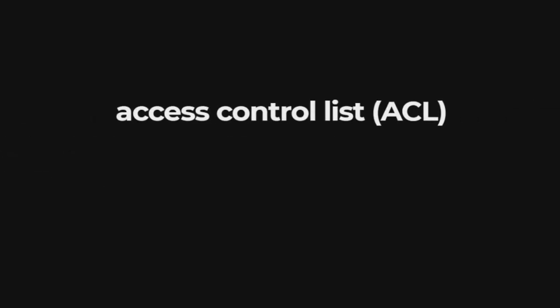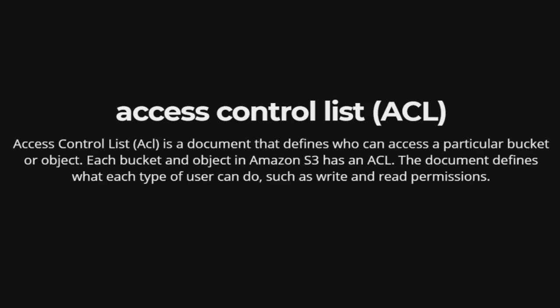Access Control List, ACL. Access Control List, ACL, is a document that defines who can access a particular bucket or object. Each bucket and object in Amazon S3 has an ACL. The document defines what each type of user can do, such as write and read permissions.